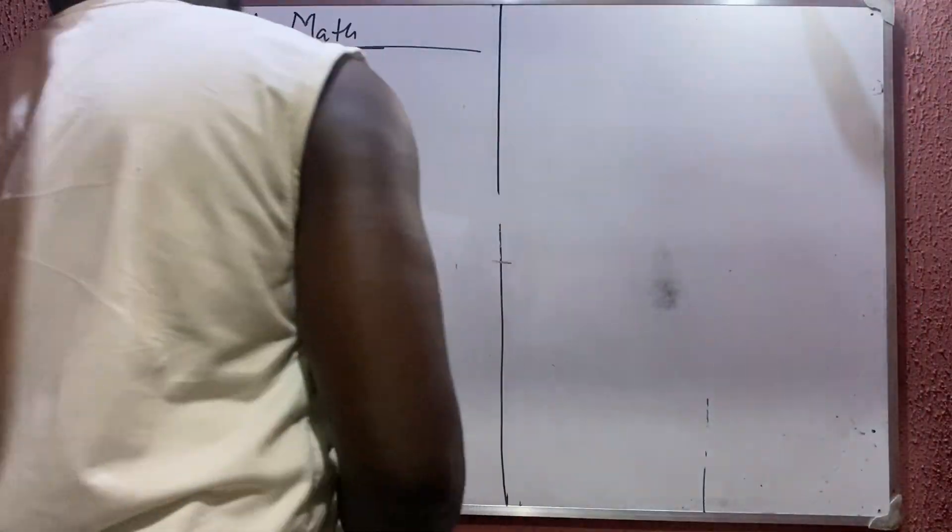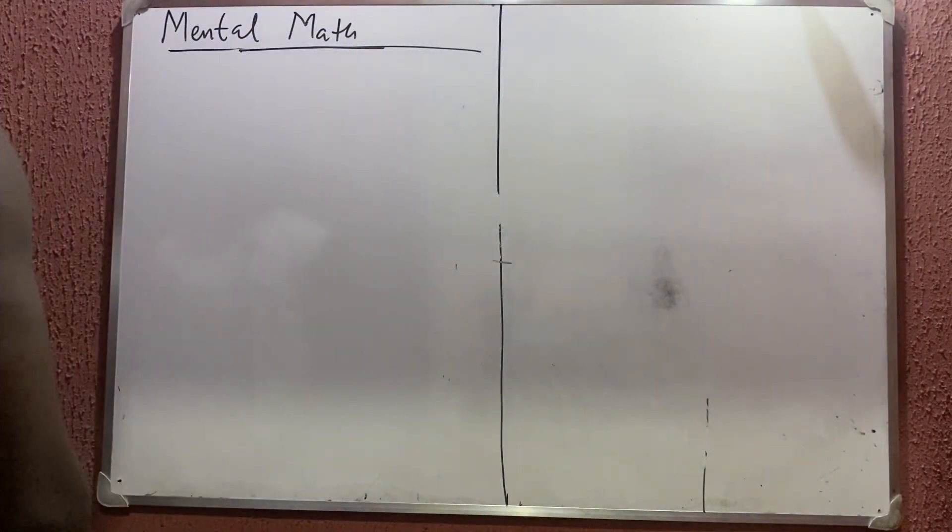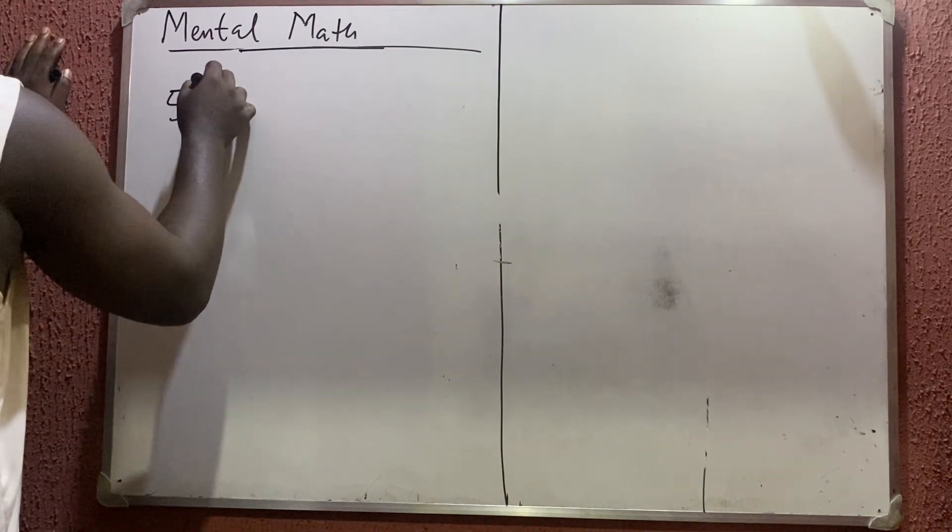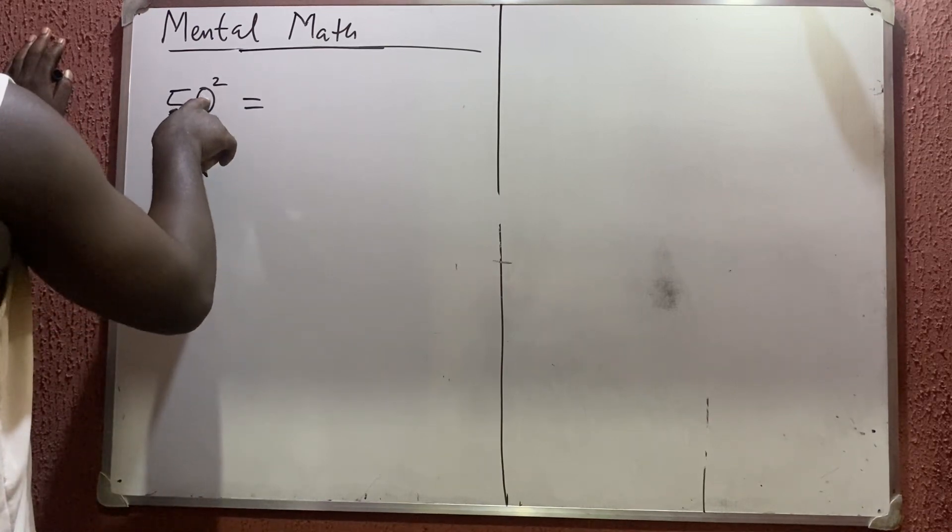Alright, in this video I'll be teaching you how to square any number in the 50s. For example, let's start with 50 itself. 50 squared is what? First of all, zero squared is zero.